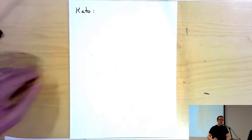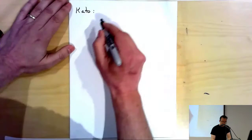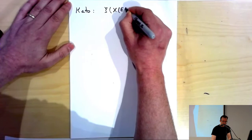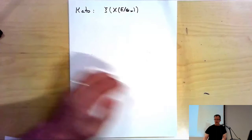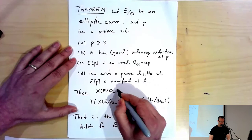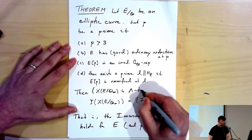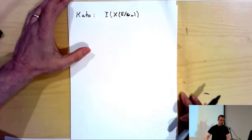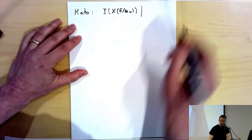What Kato was able to show, under even more general conditions than these, is that X(E/Q_∞) is Lambda-torsion. That's actually provable in much greater generality than the conditions I wrote down. But once it's Lambda-torsion we can really talk about the characteristic ideal. Then Kato proves the characteristic ideal divides the p-adic L-function.